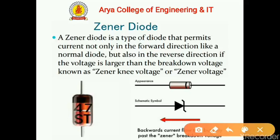A Zener diode is a type of diode that permits current not only in the forward direction like a normal diode, but also in the reverse direction if the voltage is larger than the breakdown voltage, which is known as the Zener voltage.